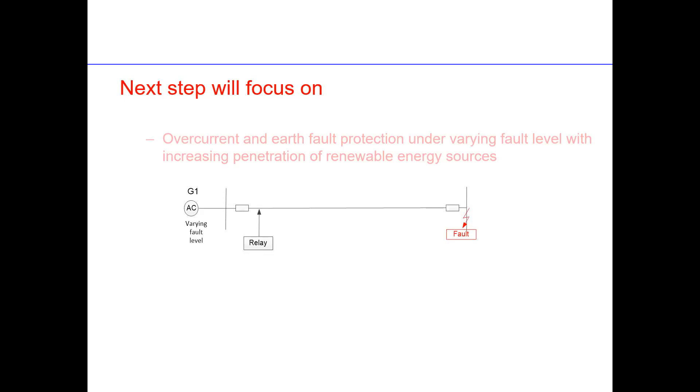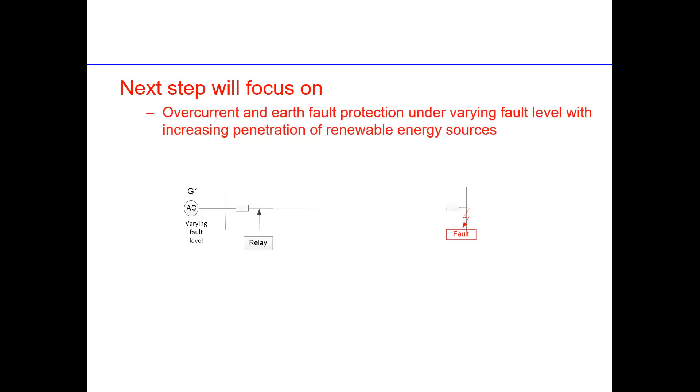Next step we focus on the assessment of overcurrent and earth fault protection under varying fault level with increasing penetration of inverter-based resources. For example, this is the assessment under varying fault level from maximum to minimum fault level. And then of course what will happen if there is anything like a wind turbine is connected here, or a solar is connected to this one. What will happen when there is a fault here? Of course when this is a weak source. How will this relay behave? What about when the fault is in here? Stay tuned guys, and thank you for watching this video. Have a nice time.